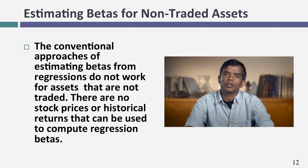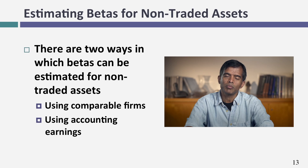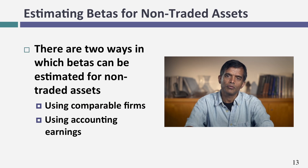Here's a key advantage of bottom-up betas: the approach works even if you came to me with a private business or a division of a publicly traded company, where you can't run a regression. Some people use accounting earnings regressions for private companies — running the company's accounting earnings against S&P 500 earnings — but I wouldn't even try that. Accounting earnings are not estimated frequently enough for a regression beta based on them to have any meaning. Stick with the bottom-up beta approach.